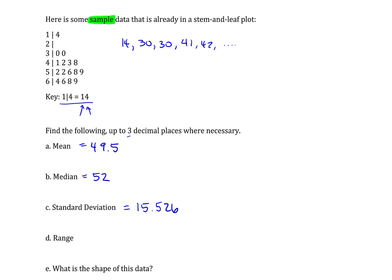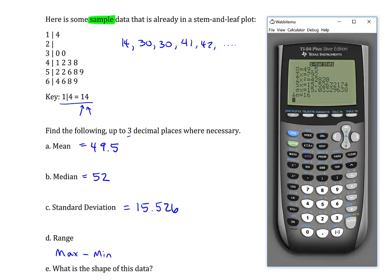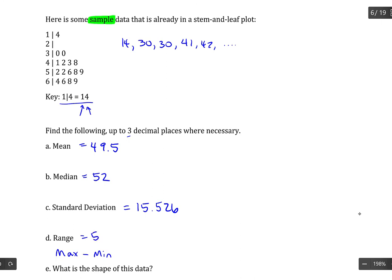The range is your maximum data entry minus your minimum data entry. And the calculator doesn't give you the value of the range directly, but it does give you the minimum and the maximum. So you can take 69 minus 14 and obtain the range from that, so 55.